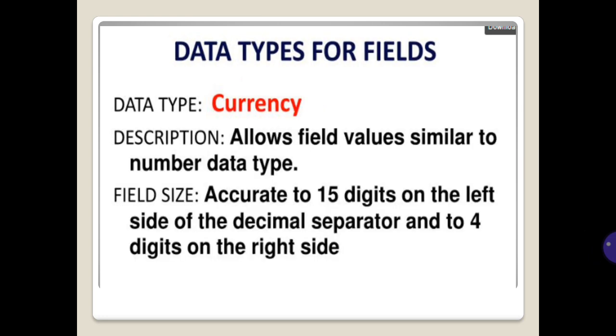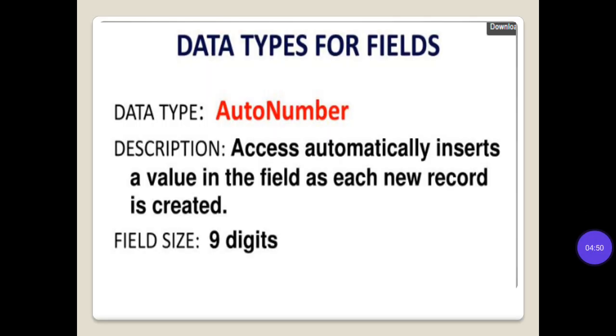Data type: currency. Description: allows field values similar to number data type. Accurate to 15 digits on the left side of the decimal separator and to 4 digits on the right side. Data type: autonumber. Description: Access automatically inserts a value in the field as each new record is created. Field size: 9 digits.